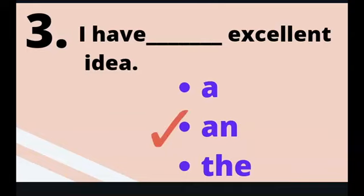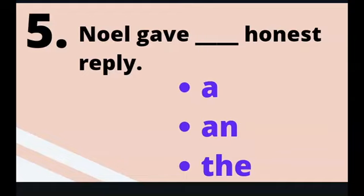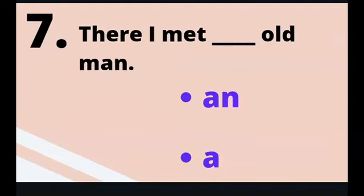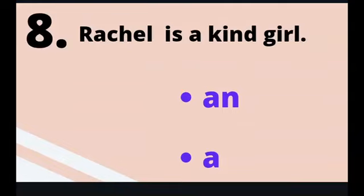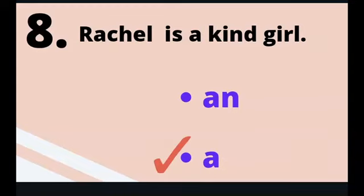Question 3: I have ___ excellent idea. Answer: I have an excellent idea. Question 4: Ronak has bought ___ new car. Answer: Ronak has bought a new car. Question 5: Noel gave ___ honest reply. Answer: Noel gave an honest reply. Question 6: This is ___ pen that I had lost. Answer: This is the pen that I had lost. Question 7: There I met ___ old man. Answer: There I met an old man. Question 8: Rachel is ___ kind girl. Answer: Rachel is a kind girl.